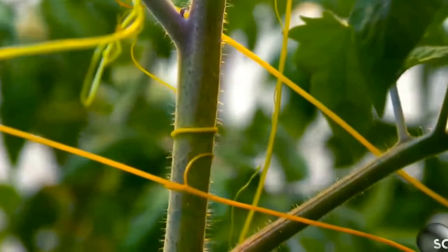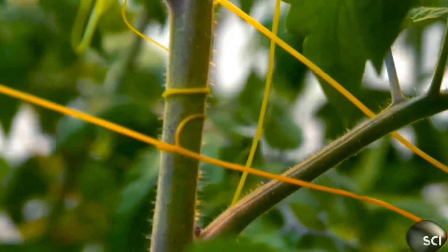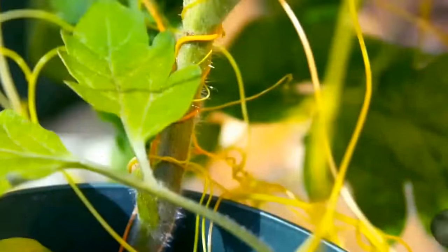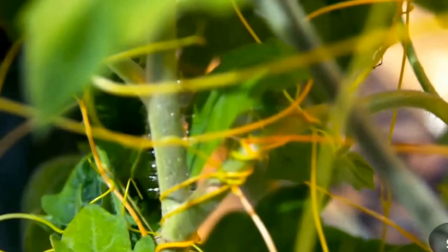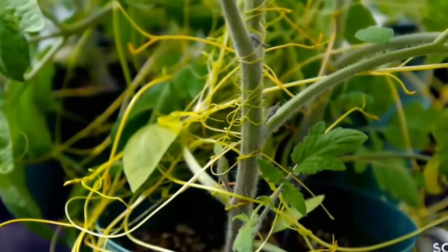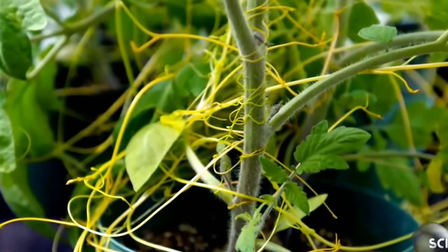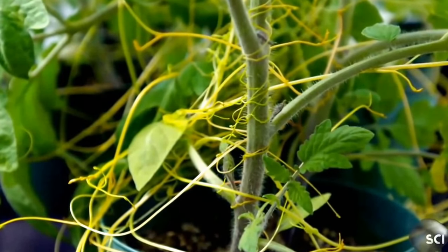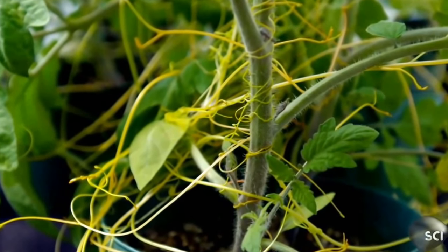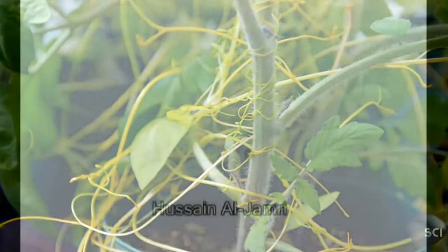We are observing that cuscuta plant is a partial parasite, which is hosting on tomato. With the help of haustoria, it penetrates into the host plant and absorbs the water.